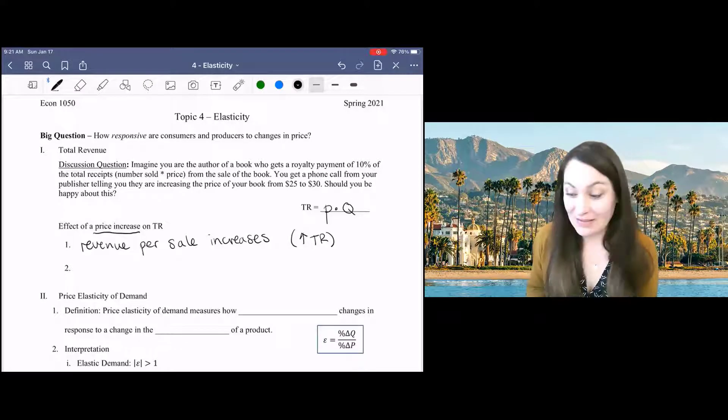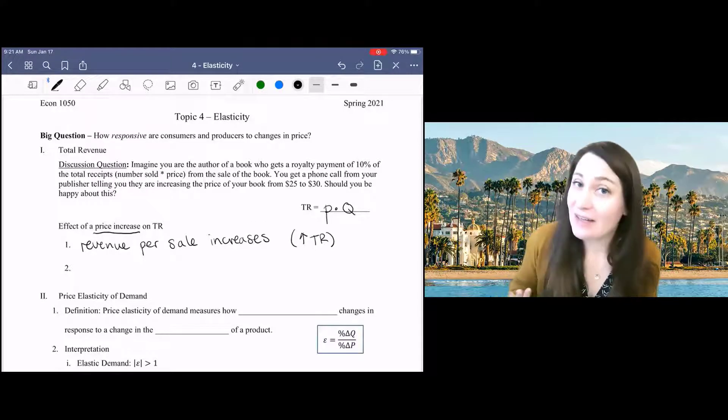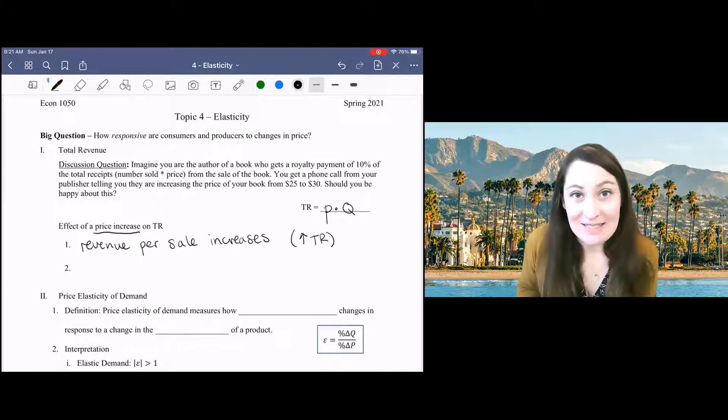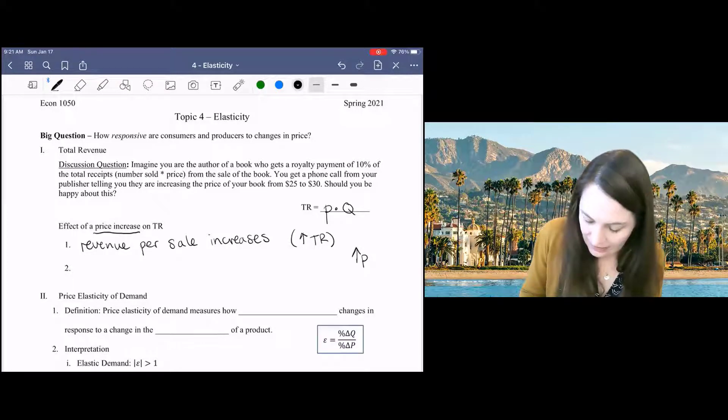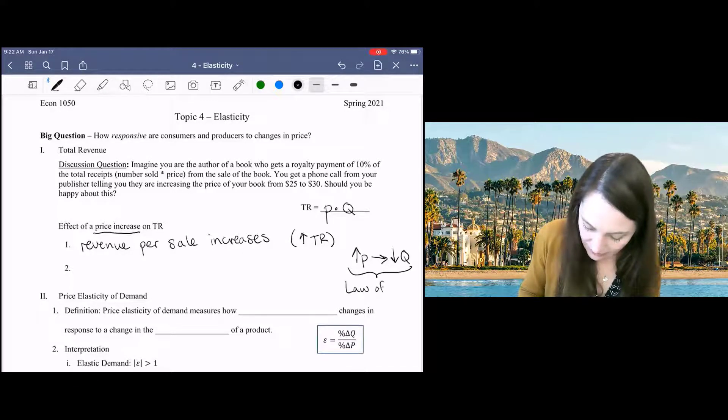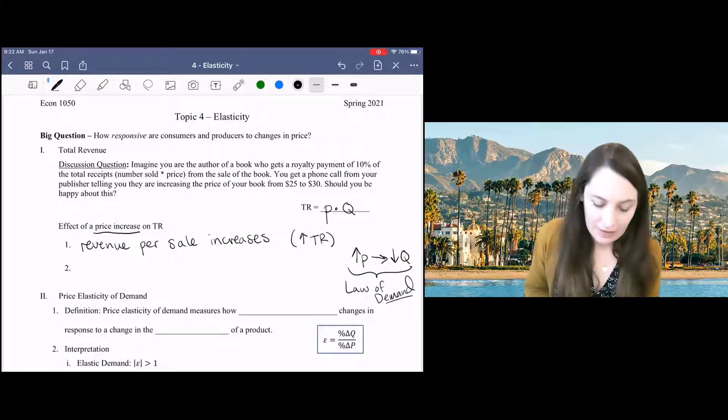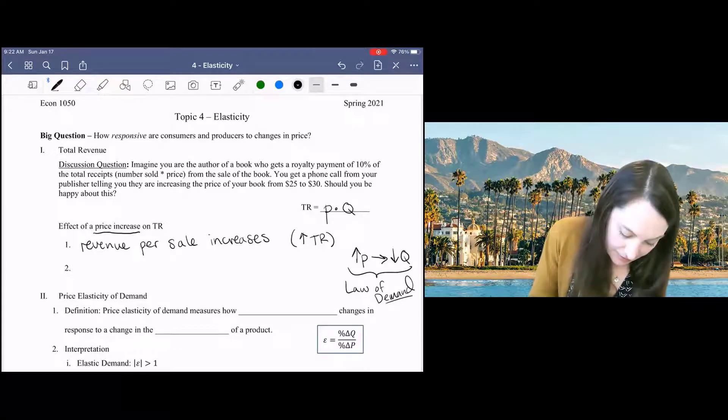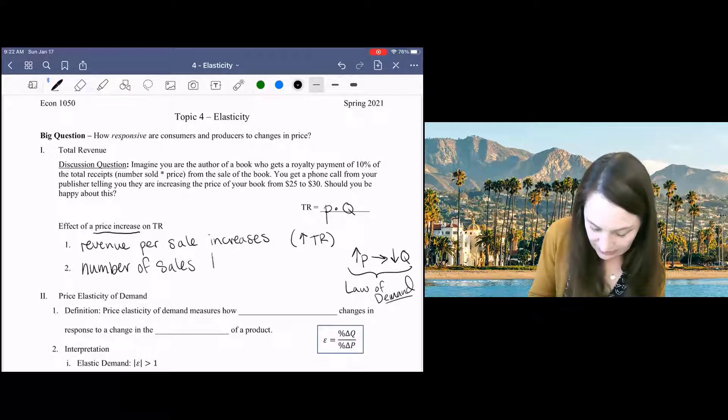But remember the law of demand. As the price of your book increases, people will be less likely to purchase your book. An increase in price will lead to a decrease in quantity because demand is downward sloping. When your book becomes more expensive, fewer people will buy it. So although the revenue per sale is increasing, the number of sales decreases.